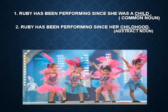Let us look at more sentences. 'Ruby has been performing since she was a child.' The word 'child' is a common noun, and 'Ruby' is a proper noun. In the second sentence, 'Ruby has been performing since her childhood' — the word 'childhood' is a state, so it's an abstract noun. Abstract nouns can be formed from common nouns. The word 'child' is a common noun, whereas 'childhood' is an abstract noun.